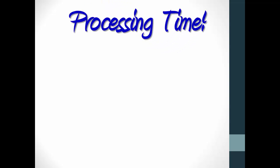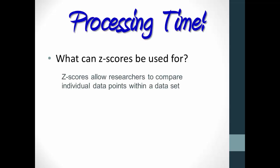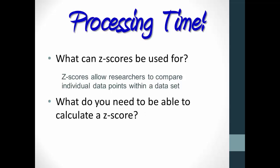Processing time. What can z-scores be used for? They allow researchers to compare individual data points within a dataset. And what would you need to be able to calculate a z-score? You need the score you want to convert, the mean for the distribution, and the standard deviation for the distribution. Oh, and of course, you'll need the formula.